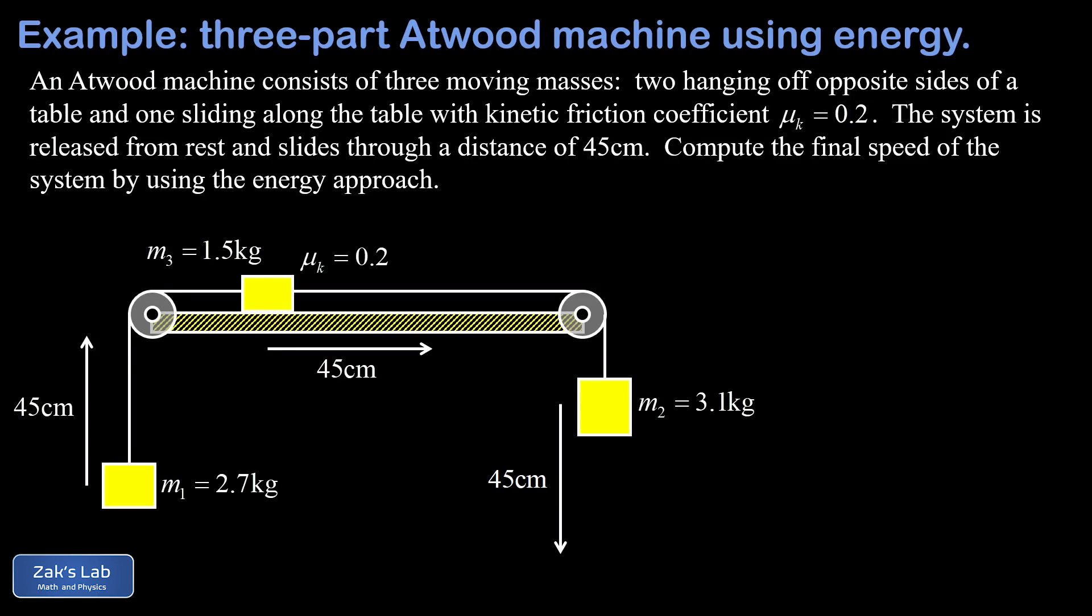In this video we're analyzing a three-part Atwood machine. We have two hanging masses off the left and right sides of a tabletop, connected by strings to a mass that slides along the tabletop feeling kinetic friction. We're asked to use the energy approach to find the final speed of the system after it's moved through a displacement of 45 centimeters.